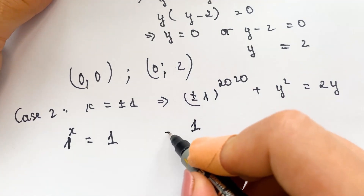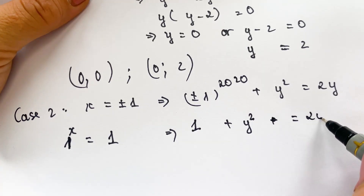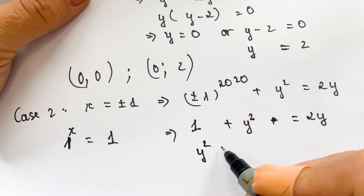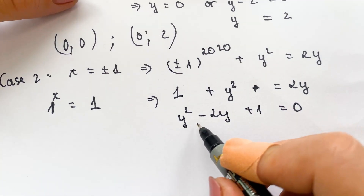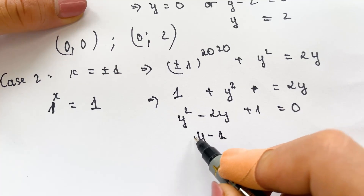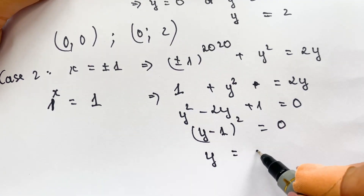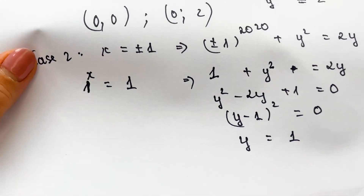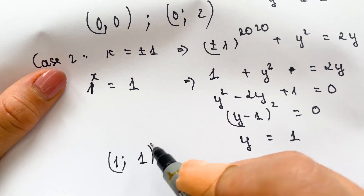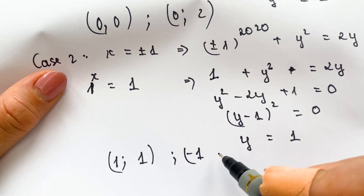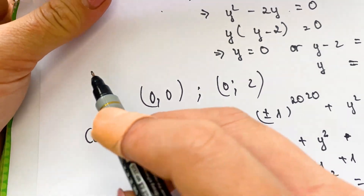So we have 1 plus y squared equals 2y, then y squared minus 2y plus 1 equals 0, which is the perfect square identity (y minus 1)^2 equals 0. Therefore y equals 1. So for x equals 1, y equals 1, and for x equals minus 1, y also equals 1.